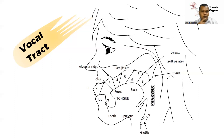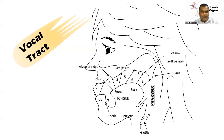For example, our teeth. Teeth cannot be moved. We have two parts of our teeth: the upper teeth and the lower teeth. Then we have the alveolar ridge. The alveolar ridge is the place in which our teeth are fixed.